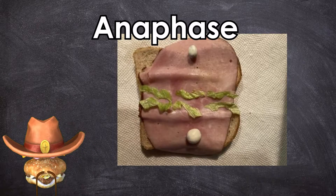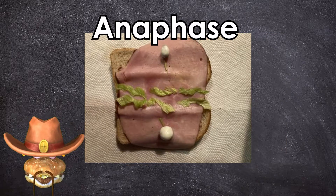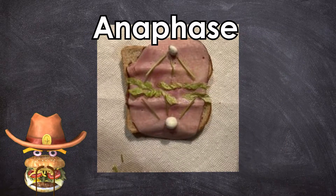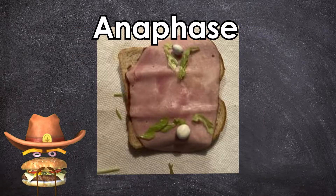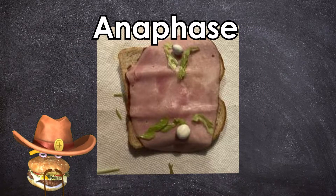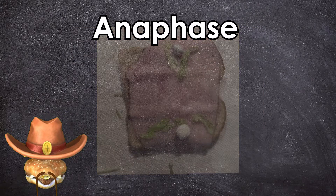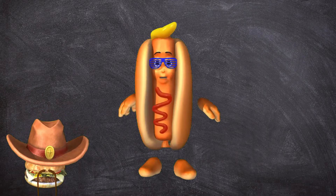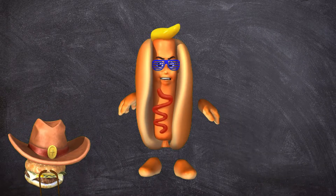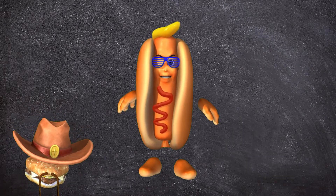Next, in anaphase, the sister chromatids separate from each other and are pulled towards opposite ends of the cell. The protein glue that holds the sister chromatids together is broken down, allowing them to separate. Protein? Now I want some chicken.